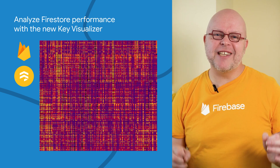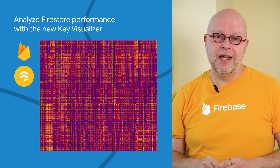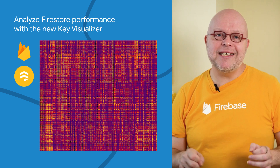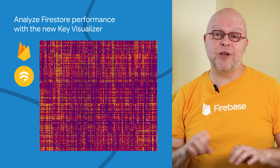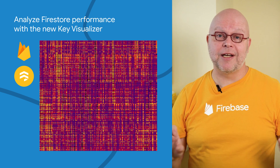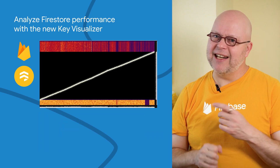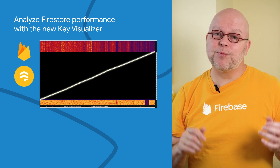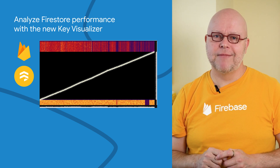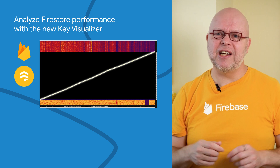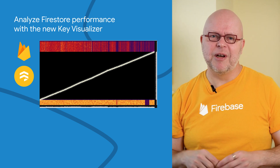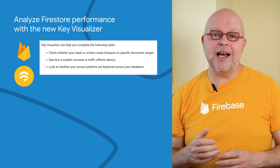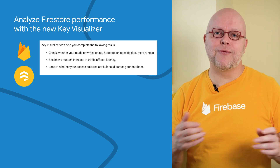This heat map, for example, represents an effective use of Firestore. It shows a fine-grained mix of dark and bright colors, and that means that the reads and writes are evenly distributed throughout your database. But a heat map with a single bright diagonal line indicates that a database probably uses sequential keys. And such strictly increasing or decreasing keys are an anti-pattern in Firestore because they can create read or write hotspots. The Key Visualizer makes it easy to see these patterns in your Firestore usage.